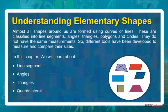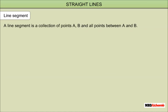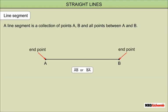In this chapter we will learn about line segments, angles, triangles, and quadrilaterals. A line segment is a collection of points A, B, and all points between A and B. A line segment is named by its endpoints. Here are two ways to name a segment: line segment AB or line segment BA. It has two endpoints.